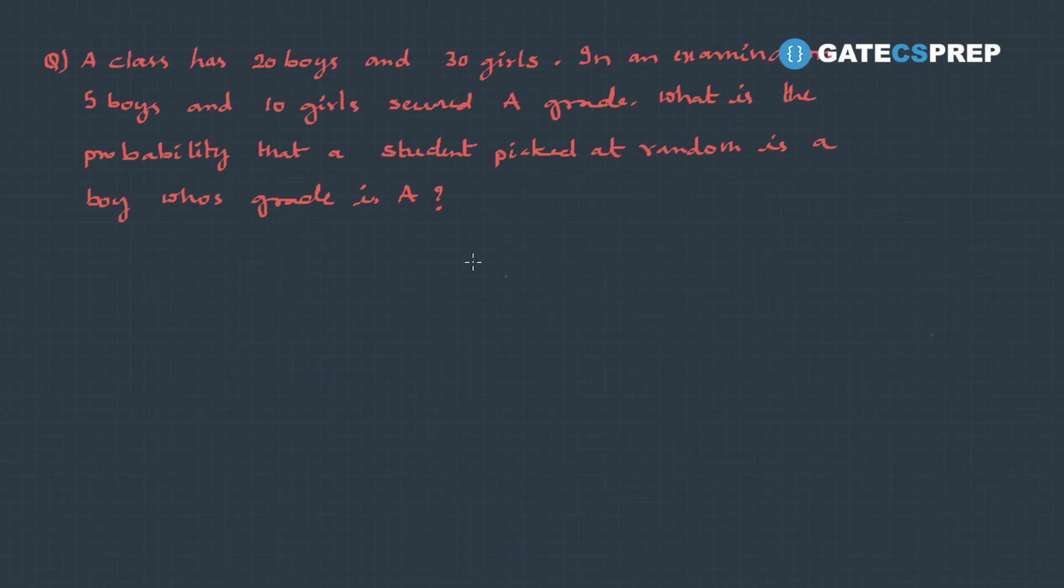What is the probability that a student picked at random is a boy whose grade is A? To solve this, let's draw this schematic diagram: a class has boys as well as girls.